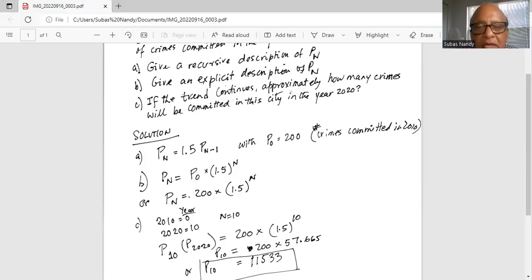Year 2010 is the 0th year and year 2020 is the 10th year. So for 2020, n is equal to 10, that is 10 years from 2010. So P10, which is P2020, is equal to 200 multiplied by 1.5 exponent 10. The exponent 10 comes from the fact that 2020 minus 2010 is equal to 10 years.